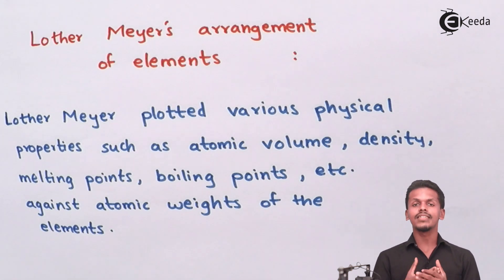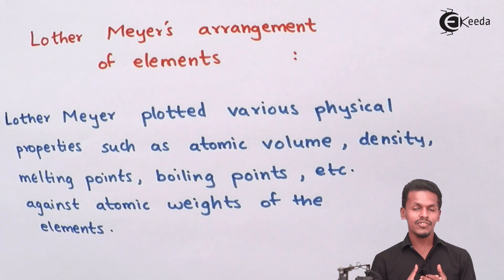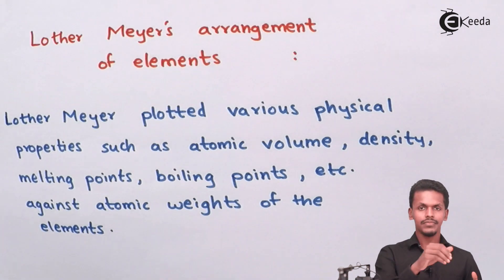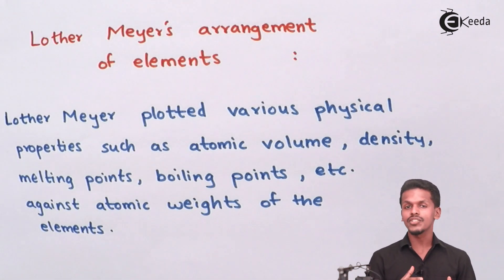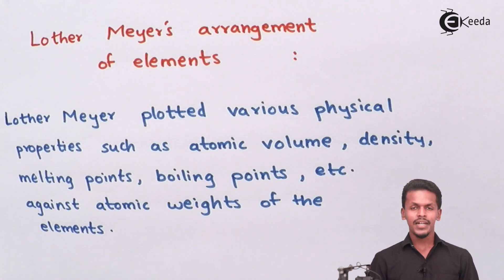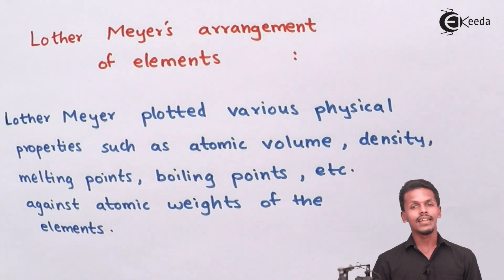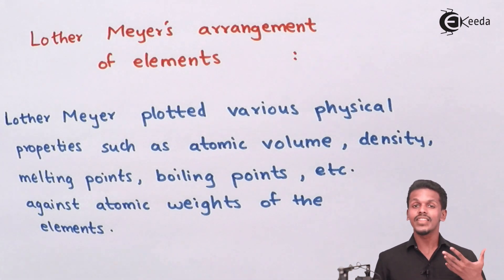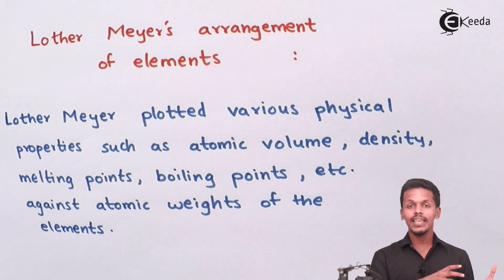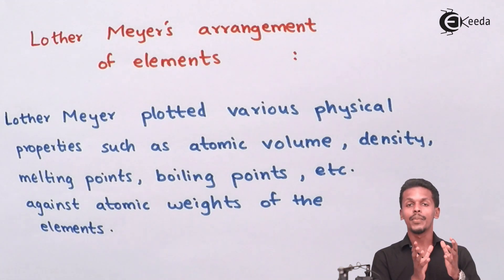But Lothar Meyer did something extra. While previous scientists related elements based on atomic weight and properties, Lothar Meyer arranged the elements by plotting atomic weight against their atomic volume, density, melting point, and boiling point — classifying each element by these specific physical properties.